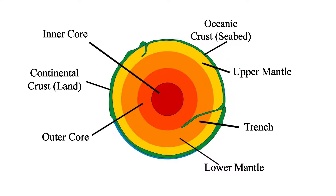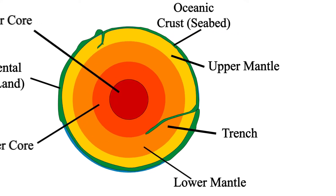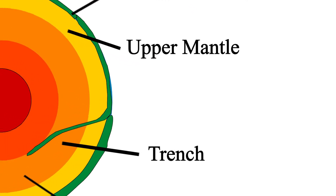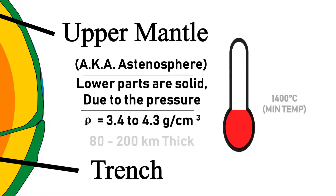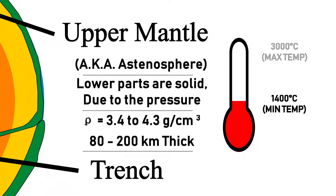The trenches are part of the crust. We'll only discuss the things that affect the continental drift. The upper mantle, also known as the Asthenosphere, has a density of 3.4 to 4.3 grams per cc. Its thickness is between 80 and 200 kilometers, and its temperature ranges from 1,400 degrees Celsius to 3,000 degrees Celsius.